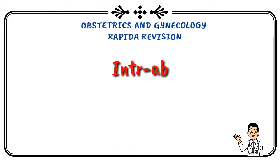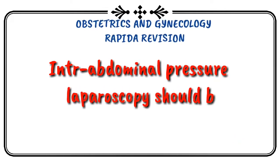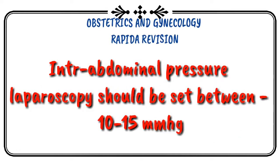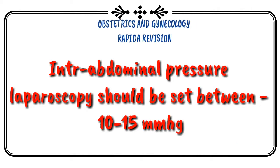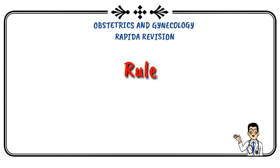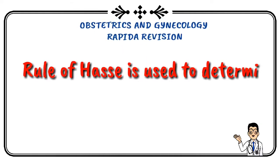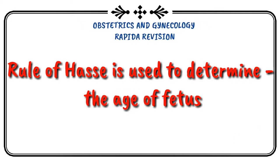Intra-abdominal pressure in laparoscopy should be between 10 to 15 mmHg. Rule of Haase is used to determine the age of the fetus.